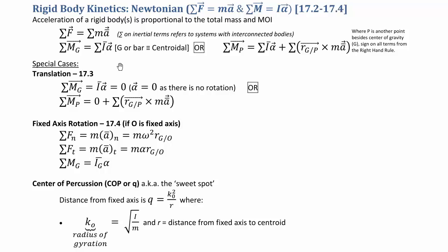Then we get into the moment term. If we sum moments about the centroid, point G, we take the moment of inertia I-bar times alpha. Alpha is constant for the whole body, so it doesn't matter what point alpha is about. But if you want to sum moments about some other point P, we still add I-bar alpha, but we need to add the kinetic moment term — an inertial moment. We cross the distance from our current point back to the centroid into the centroidal acceleration.